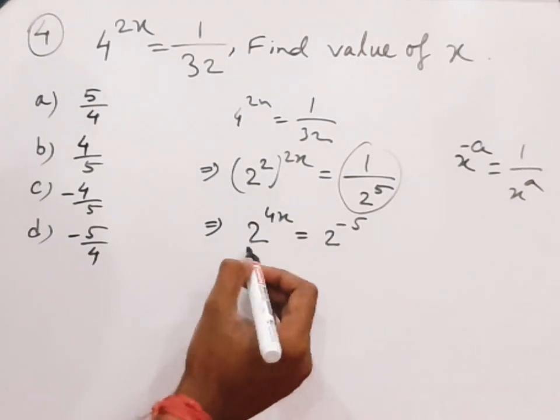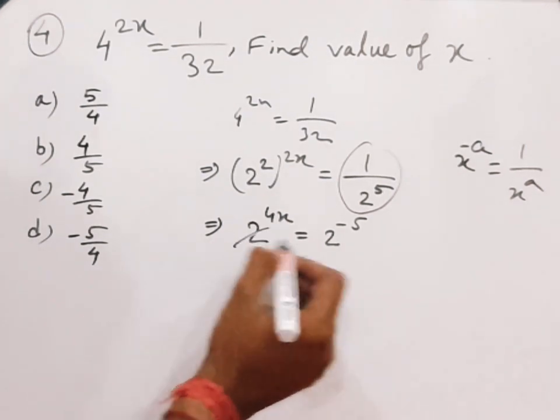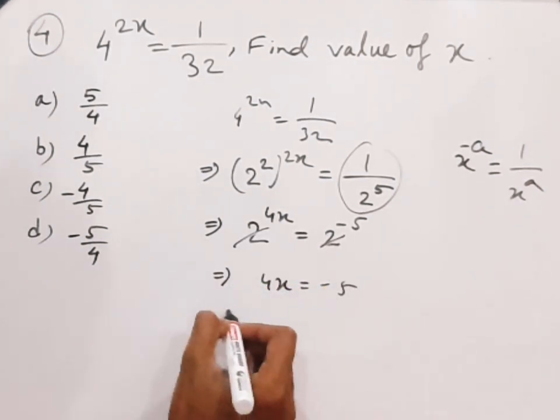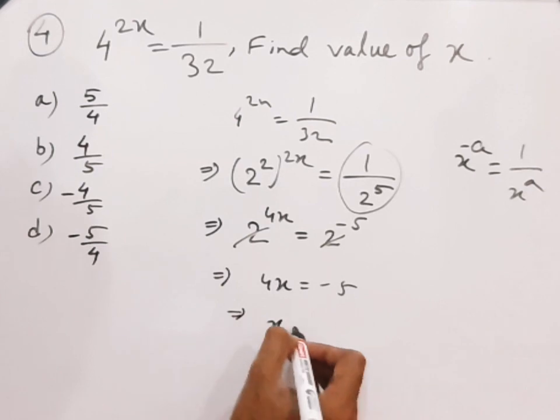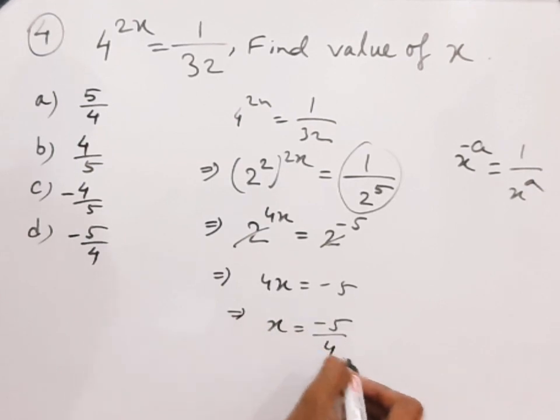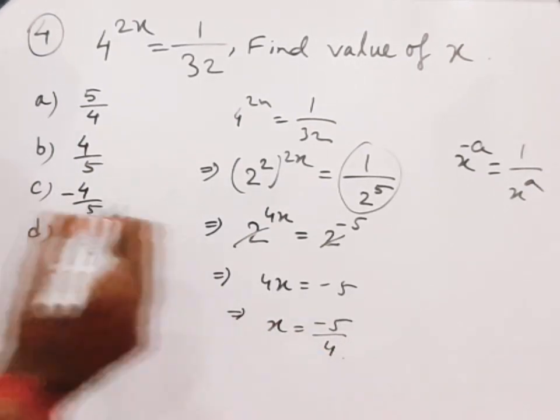We can cancel the base 2 on both sides, so 4x equals minus 5, therefore x equals minus 5 by 4. So that is the answer.